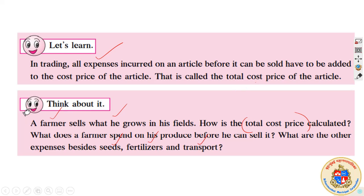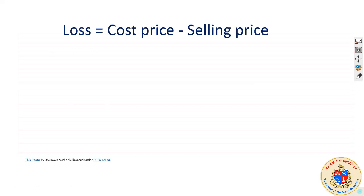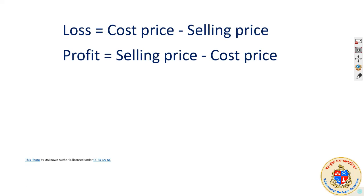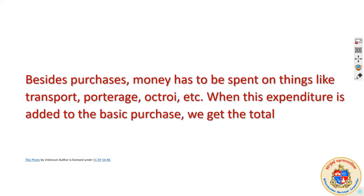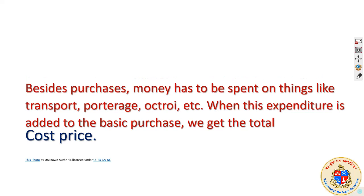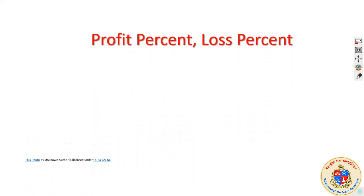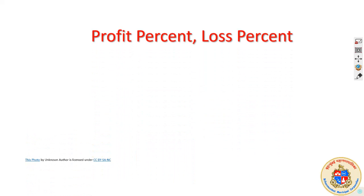This is something you understood earlier in the case of a farmer. Loss is nothing but cost price minus selling price where cost price is high. While thinking about the total cost price, you should think about transport, postage, octroi and all other expenses that make up the cost price. Now we are going to think seriously about something new: profit percent and loss percent.